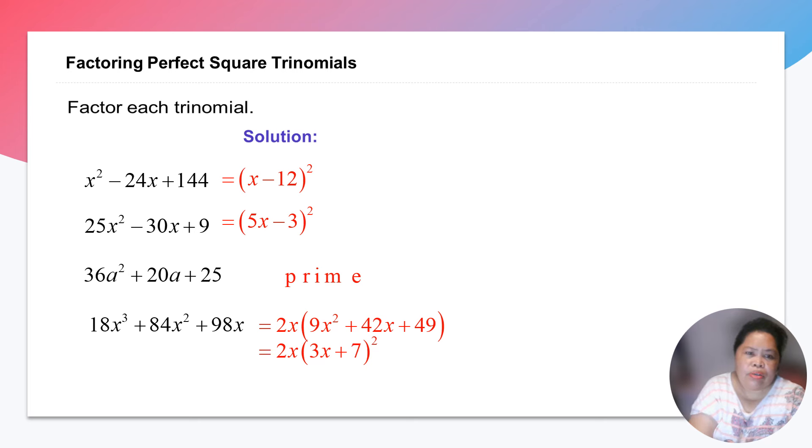Okay, so we have here, factor each trinomial. So of course, x squared minus 24x plus 144. So always think of a number. So for example, 144, that is a perfect square, which is, that is 12 squared. 12 square for 144. That means the factors of x squared is x minus 12. So that's 12 squared. Because 12 times 2 is 24, negative 24. All right?